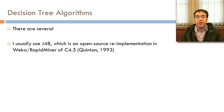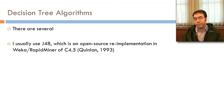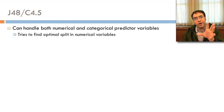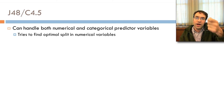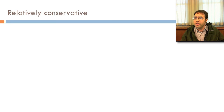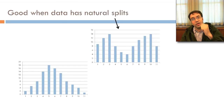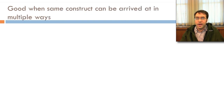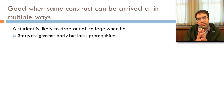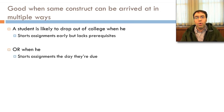There are a lot of decision tree algorithms. I usually use J48, an open-source re-implementation in WEKA and RapidMiner of Ross Quinlan's C4.5 algorithm — it's one of the classic ones. It can handle both numerical and categorical predictor variables, predicts a categorical variable, and tries to find an optimal split in numerical variables. It's relatively conservative, good when the data has natural splits, when multilevel interactions are common, and when the same construct can be arrived at in multiple ways — for example, a student likely to drop out either because they start assignments early but lack prerequisites, or because they start assignments the day they're due.